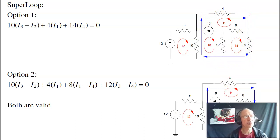And note that super loops, there are multiple solutions. I could also choose this as my super loop. 10(I3 - I2) plus 4I1 plus 8(I4 - I1) plus 12(I4 - I3), and then back where I started, equals zero. Multiple ways of doing it. I need a fourth equation though.